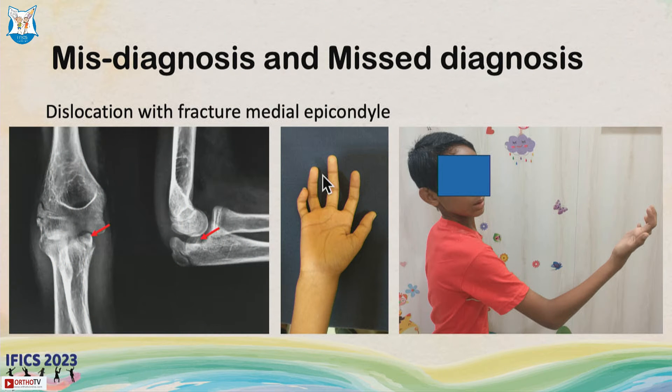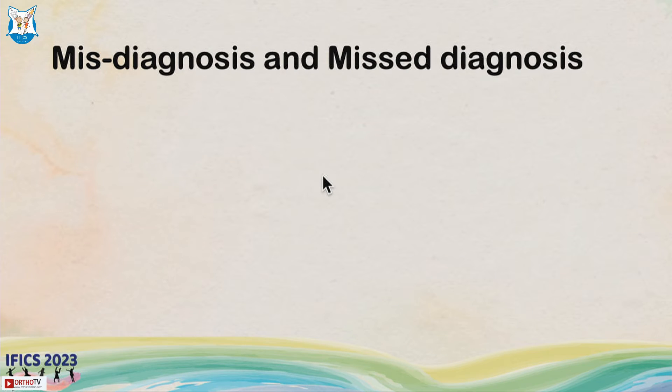A neglected incarcerated medial epicondyle fracture can result in stiffness and ulnar neuropathy. So this scenario has to be kept in mind.